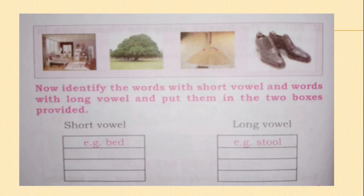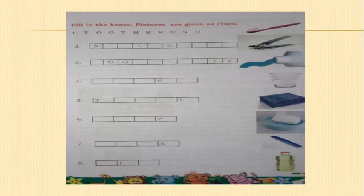In page number nine, you should fill in the boxes by looking at the pictures. The first one is done for you. The words are: toothpaste, nail cutter, water, towel, soap, comb. Whenever you look at things at your home, try to say the spellings of those.